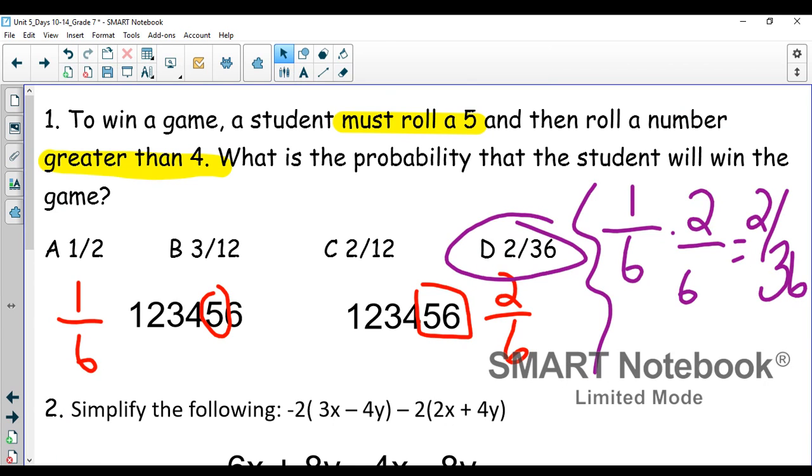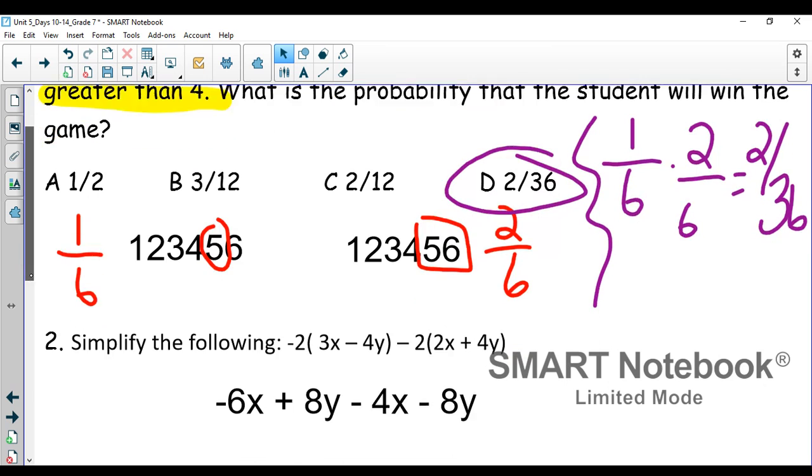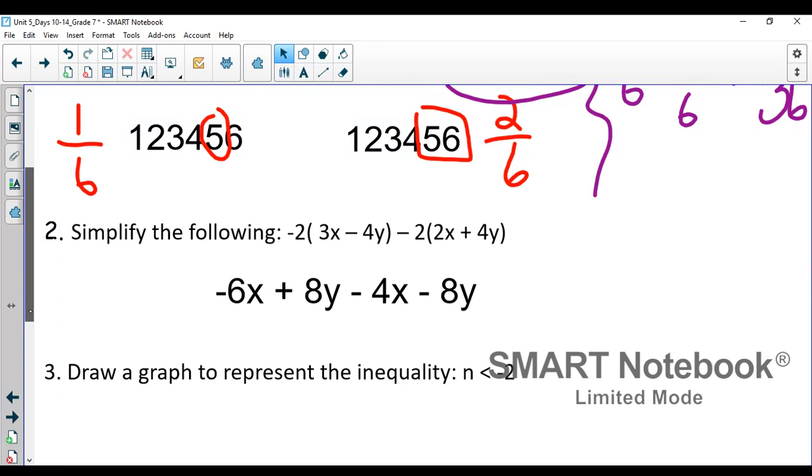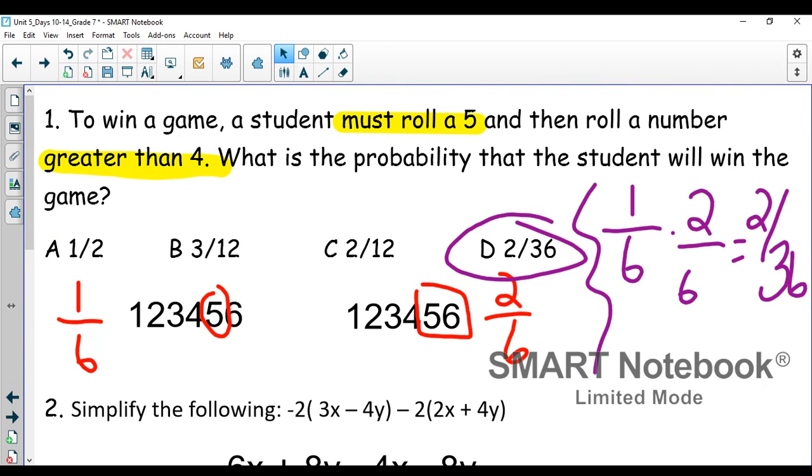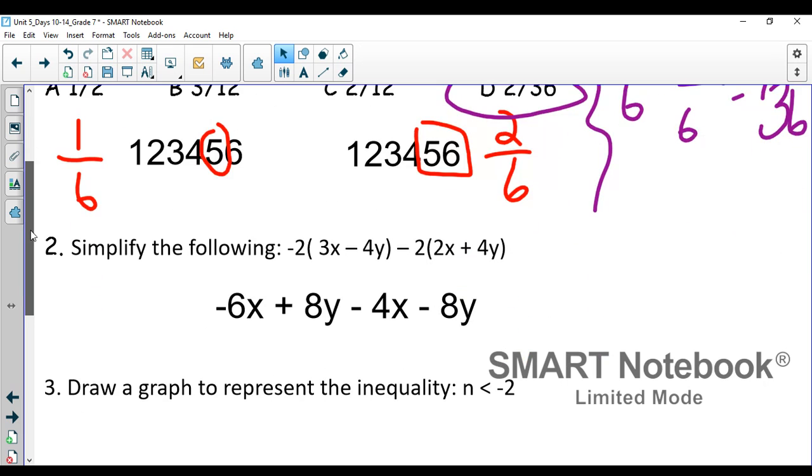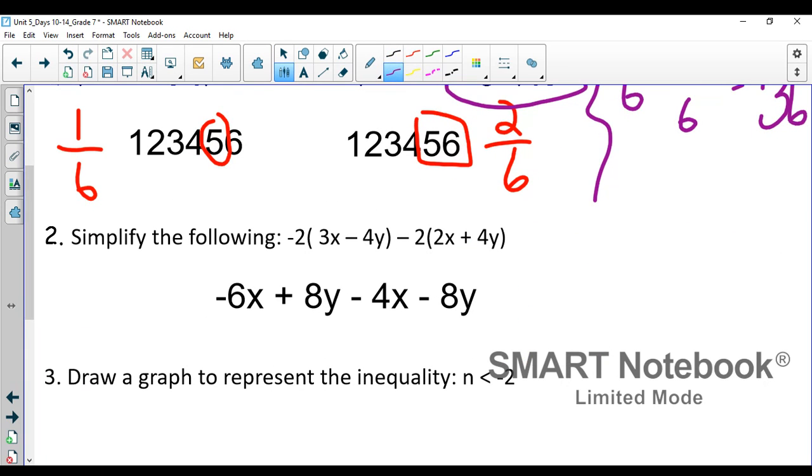Number two, this is really important going into today's lesson. We're going to combine some stuff we did last week with what we did yesterday. It says simplify the following. The first thing we have to do here is distribute. So negative two times three X and negative two times negative four Y.